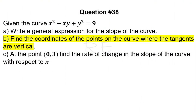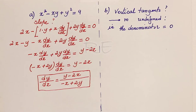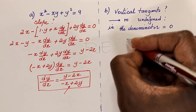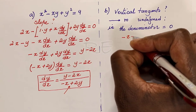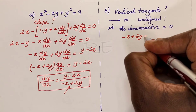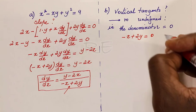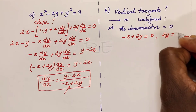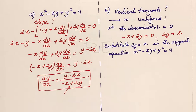For question b, we are asked to find the coordinates of the vertical tangents on the curve. Vertical tangents occur when the slope is undefined, which means in the rational expression, we need to set the denominator equal to 0. Negative x plus 2y is equal to 0, which means that 2y is equal to x, so x is equal to 2y.